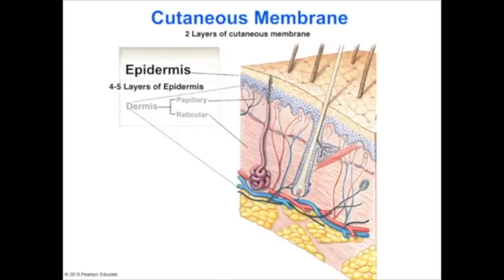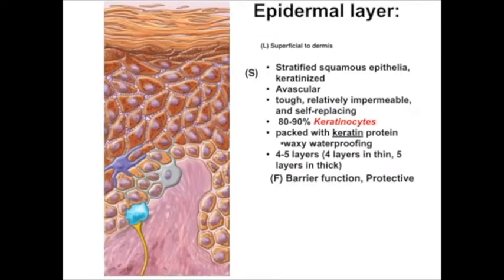Each of these layers are going to contribute to different characteristics of the epidermis. Overall, this is a stratified squamous epithelia and is keratinized — that is, it is dry — meaning it is also relatively impermeable and tough. It is avascular, like any epithelia, and like any other epithelia, it is continuously replacing itself. The barrier functions, protecting against water loss and abrasion, are largely due to these epidermal layers.